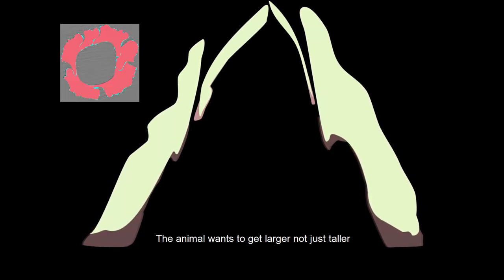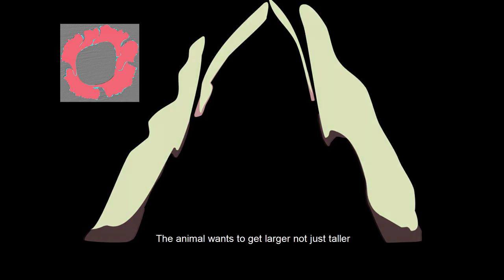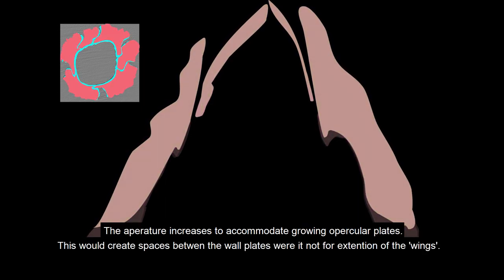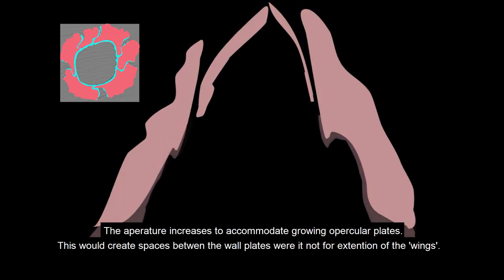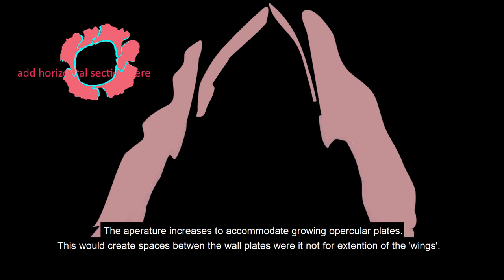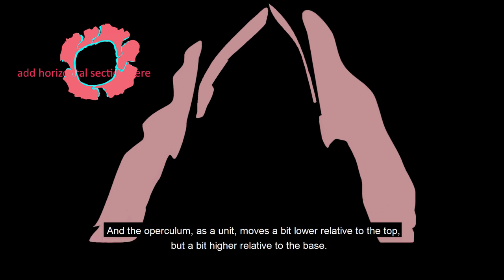The animal wants to get larger, not just taller. The aperture increases to accommodate growing opercular plates. This would create spaces between the wall plates were it not for extension of the wing.